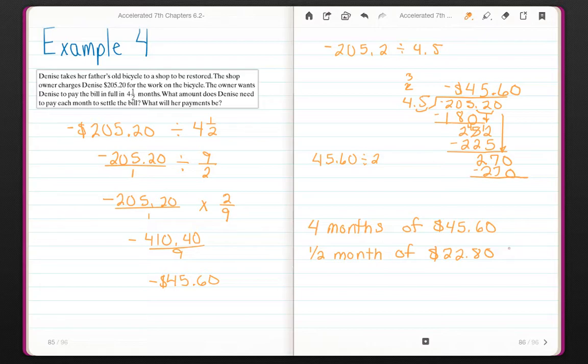Her full payments will be $45.60. But that last little half payment will be only $22.80. That's it for examples today. There are a lot. So please complete your quick checks and CYUs and see me if you have any questions.